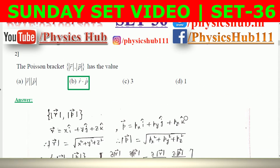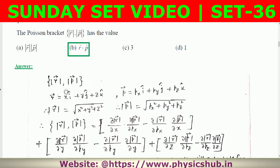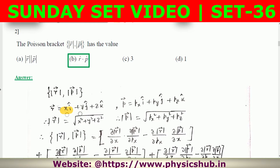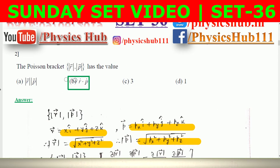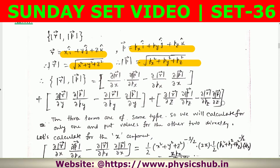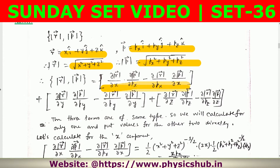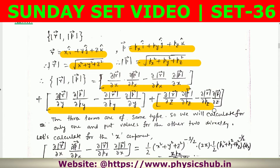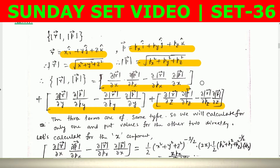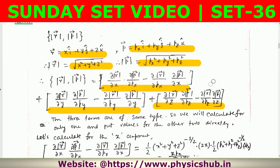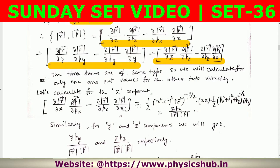The second question: the Poisson bracket of |r| and |p| — where |r| and |p| are the magnitudes of position and momentum vectors. The Poisson bracket involves a summation over x, y, z, giving three terms. Since all three terms are of the same type, we calculate the first (x-component) term and apply the same result to the others.